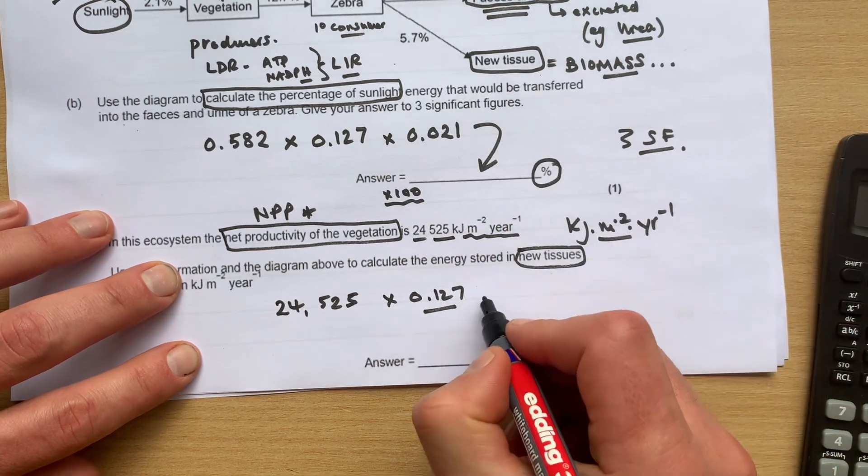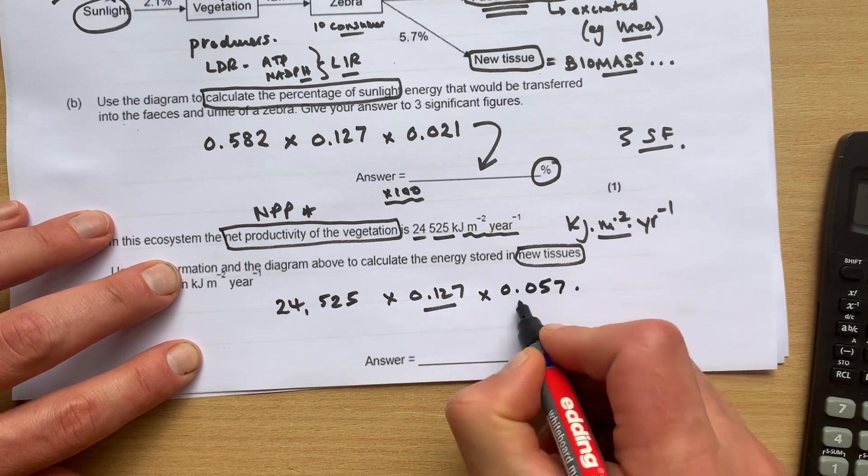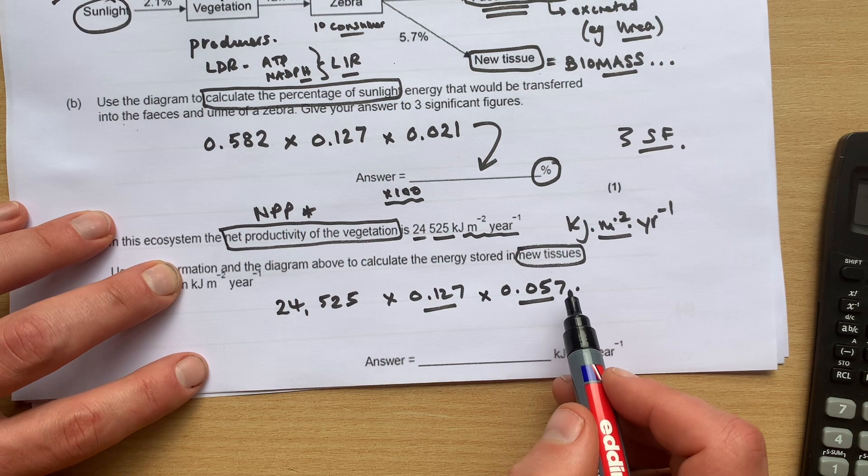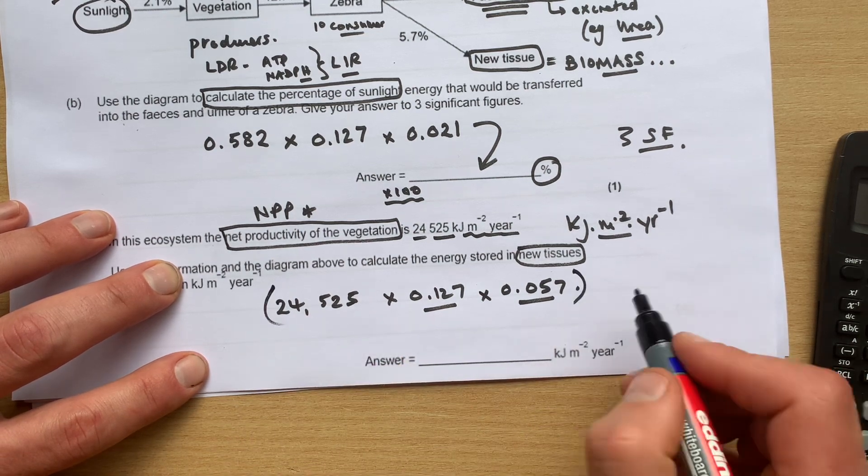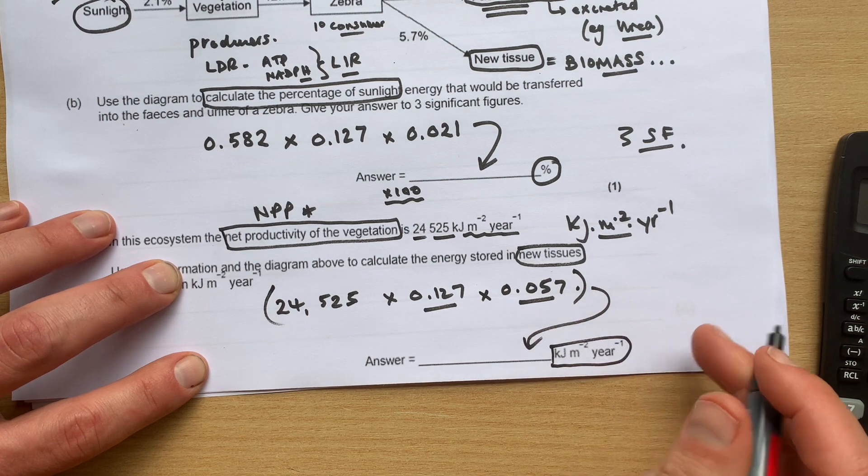So 0.057. So you guys can multiply them together, so it's this value, and then just put that in here, and remember it is kilojoules per meter squared per year.